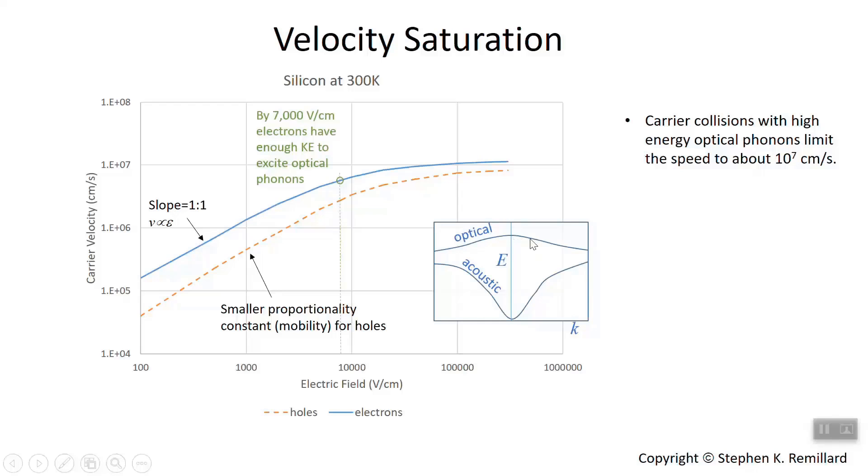And then their energy gets given to those vibrations. The electrons will, when they start to interact with these optical phonons, they're going at a good clip, about 10 to the fifth meters per second or so. We have this speed limit of about 10 to the seventh centimeters per second.